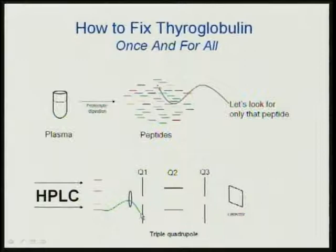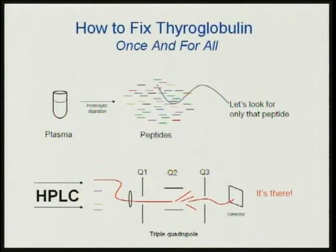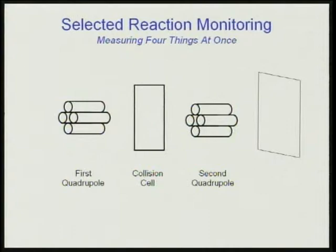We might have a peptide that's too small — the mass-to-charge ratio is too low — or one that's too high and won't even make it into the mass spectrometer. We can have one that's just right but none of the fragments are the right size, or one that makes it all the way to the detector and gives a signal. One of the hardest things to understand about the mass spectrometer is how can we measure many things at once? Because this is a fundamentally multiplexed instrument — we can monitor hundreds of things at the same time.